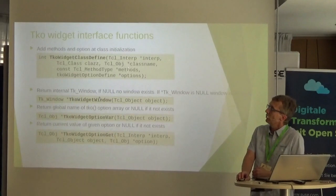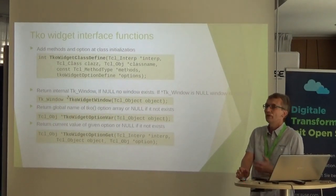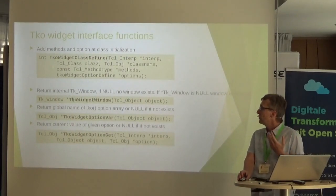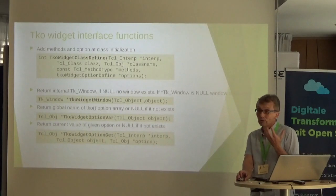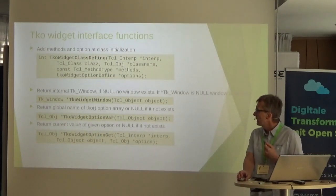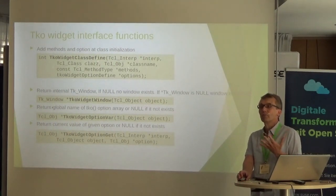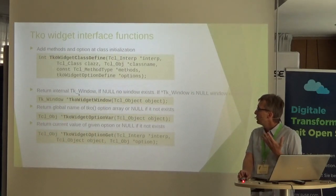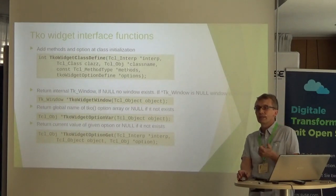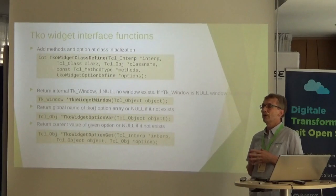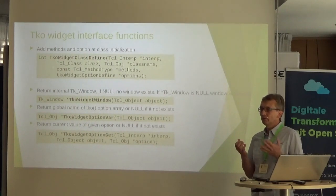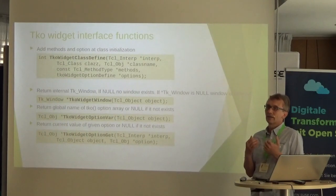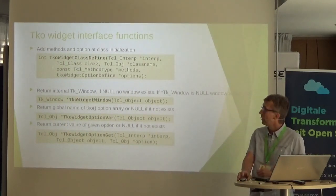The base class, the TKO widget, contains the created widget. To access these widgets there is a function that takes the current object as parameter and returns the TK window of your widget. You must check if this window exists — this is necessary for methods called from the event loop, where your widget may no longer exist. If the return is null, the widget is already gone.